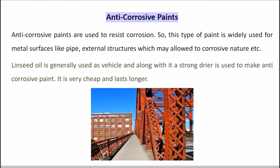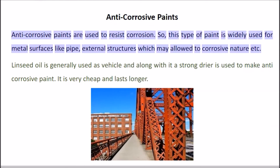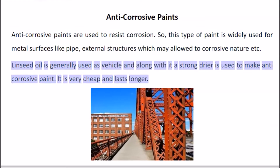Anti-corrosive paints are used to resist corrosion. This type of paint is widely used for metal surfaces like pipes and external structures which may be exposed to corrosive conditions. Linseed oil is generally used as the vehicle, and along with it a strong dryer is used to make anti-corrosive paint. It is very cheap and lasts longer.